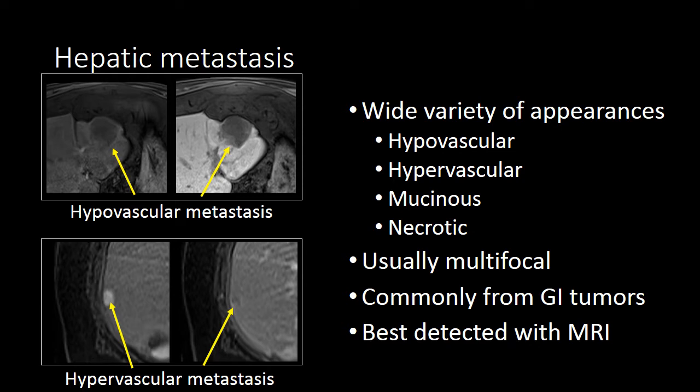Metastases to the liver are typically multifocal, and that helps distinguish metastases from primary tumors of the liver. Metastases from the GI tract are more common in the liver than metastases from sites outside of the GI tract.